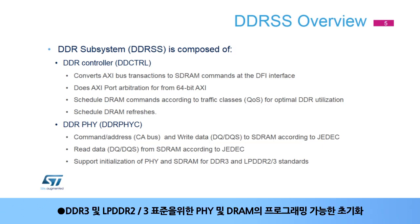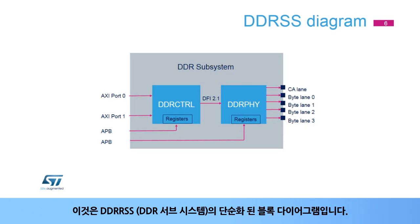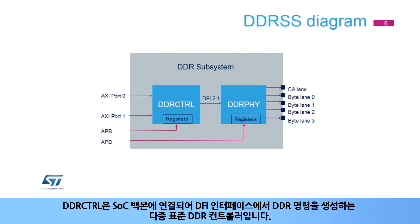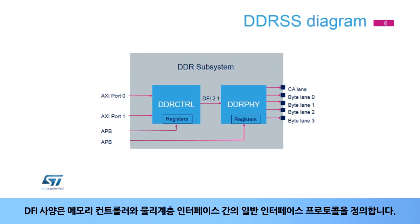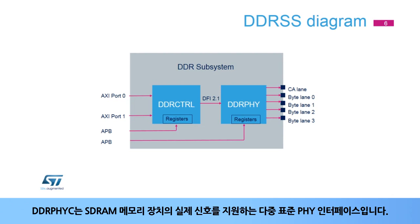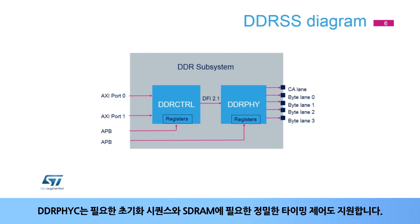Programmable initialization of PHY and DRAM for DDR3 and LPDDR2 or 3 standards. This is a simplified block diagram of the DDR subsystem, or DDRSS. DDRCTRL is a multi-standard DDR controller connected to the SOC backbone which generates DDR commands at the DFI interface. DFI specification defines a generic interface protocol between a memory controller and PHY interfaces. DDRPHYC is a multi-standard PHY interface which supports the actual signaling of SDRAM memory devices, including the required initialization sequence and fine timing control.